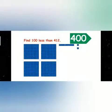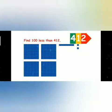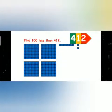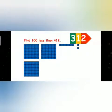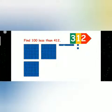For 100 less than 412: there are 400 blocks, 1 tens block, and 2 ones blocks. We take away 100 blocks. When we take away 100 blocks, it becomes 312. So 412 minus 100 is equal to 312.